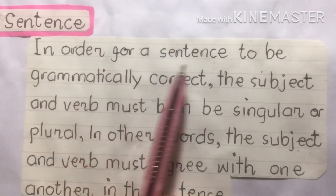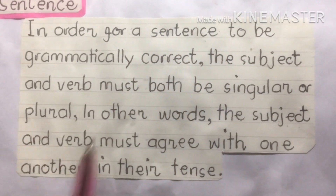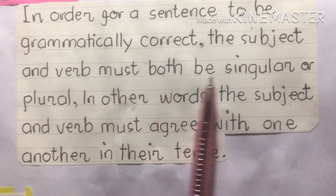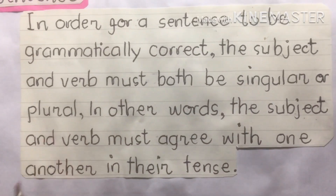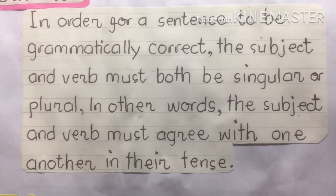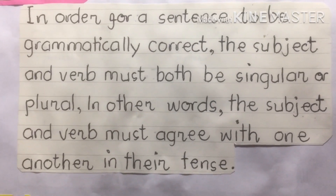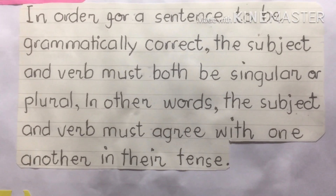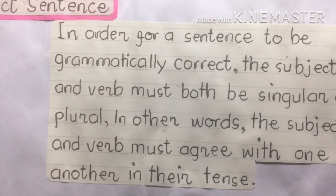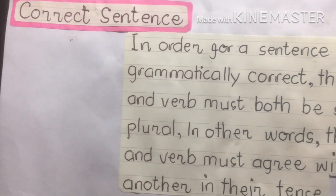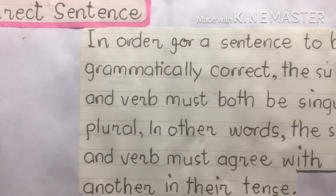For a sentence to be grammatically correct, the subject and verb must both be singular or plural. In other words, the subject and verb must agree with one another in their tense. That means when your subject is singular, your verb must be in a singular form. When your subject is plural, the verb must be in a plural form. That is subject-verb agreement.